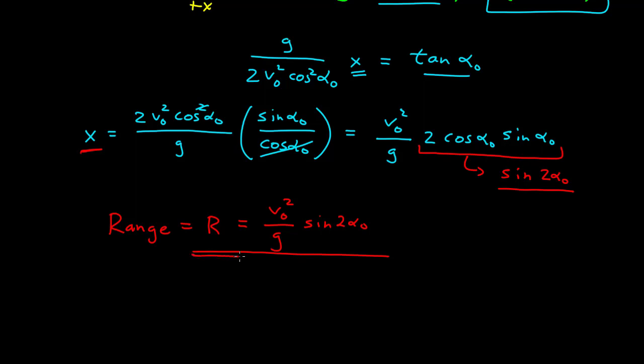And from this is where you get the expression that this is maximized for alpha naught equals 45 degrees and other things. Remember, this is still only true for no air resistance.